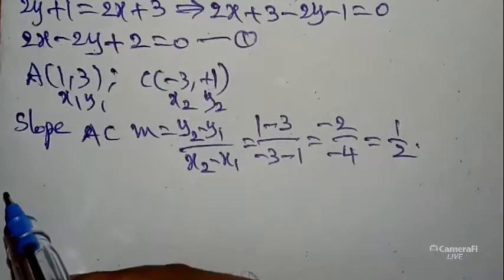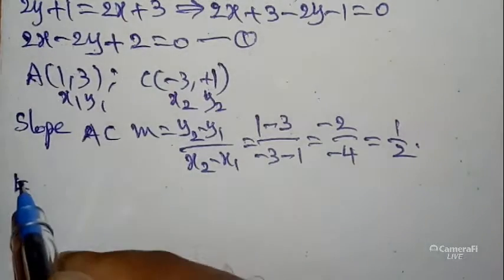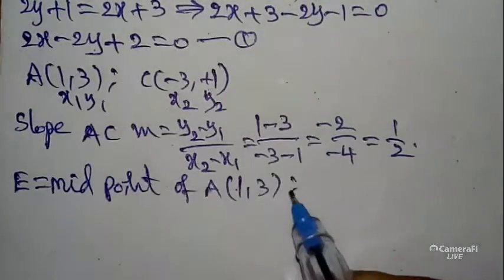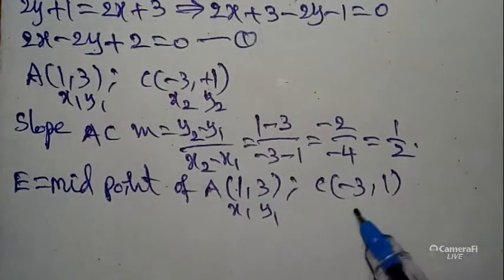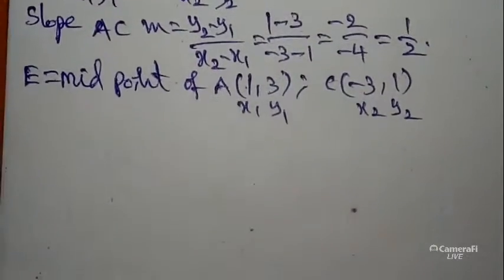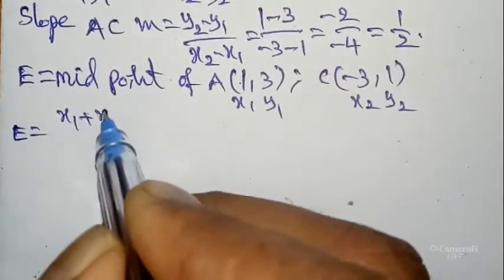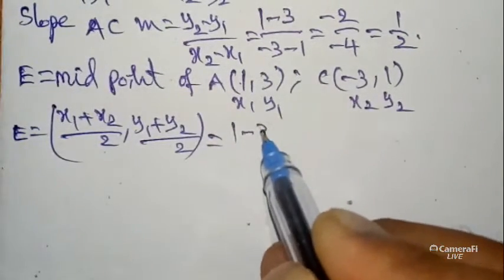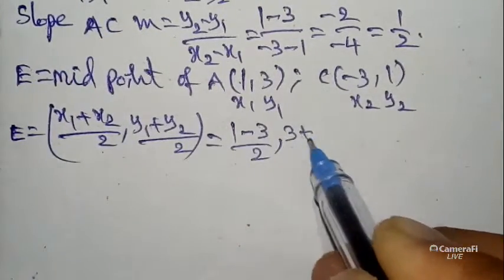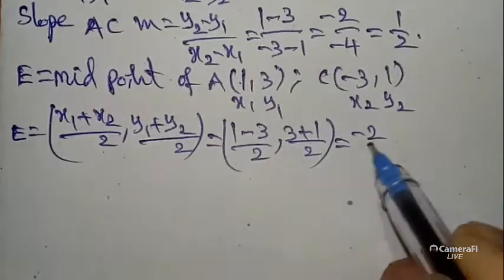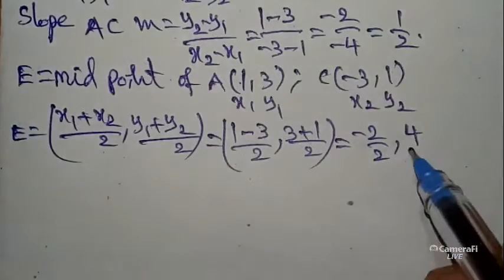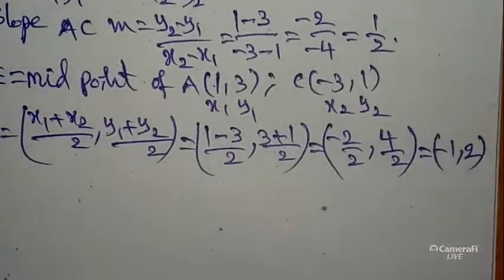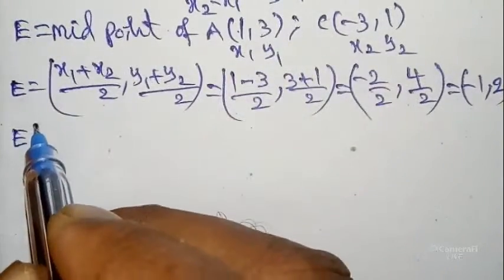E is the midpoint of AC. A = (1, 3) and C = (-3, 1), taken as (x1, y1) and (x2, y2). Using midpoint formula: ((1 + (-3))/2, (3 + 1)/2) = (-2/2, 4/2) = (-1, 2). So E = (-1, 2).